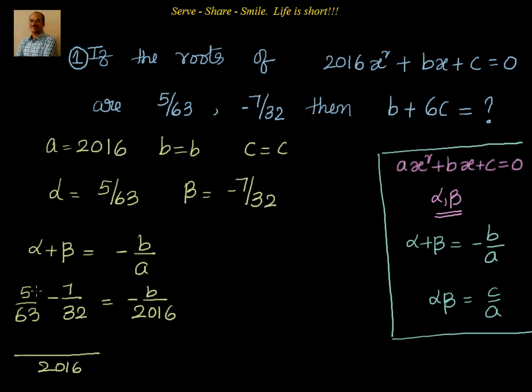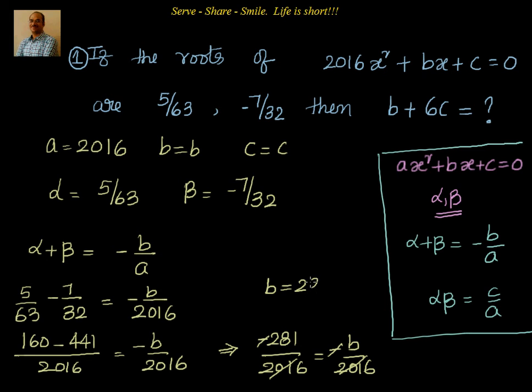We can simplify this. Cross multiplication: 5 × 32 is 160 minus 63 × 7, 441, equals -b/2016. So that gives me -281 divided by 2016 equal to -b divided by 2016. So I can simplify that. I can cancel negatives. I will get b = 281.